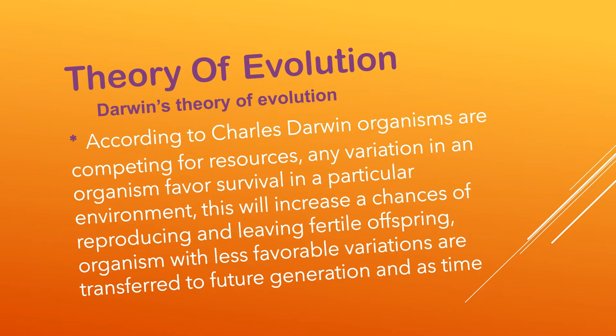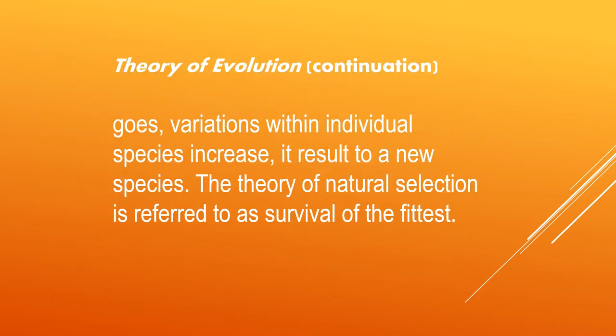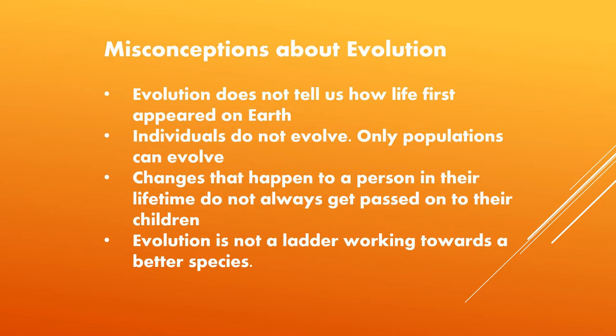According to Darwin's theory of evolution, organisms are competing for resources. Any variation in an organism that favors survival in a particular environment will increase a chance of reproducing and leaving fertile offspring. Organisms with less favorable variations are less likely to be transferred to future generations, and as time goes on, variations within individual species increase, resulting in new species. The theory of natural selection is also referred to as survival of the fittest.